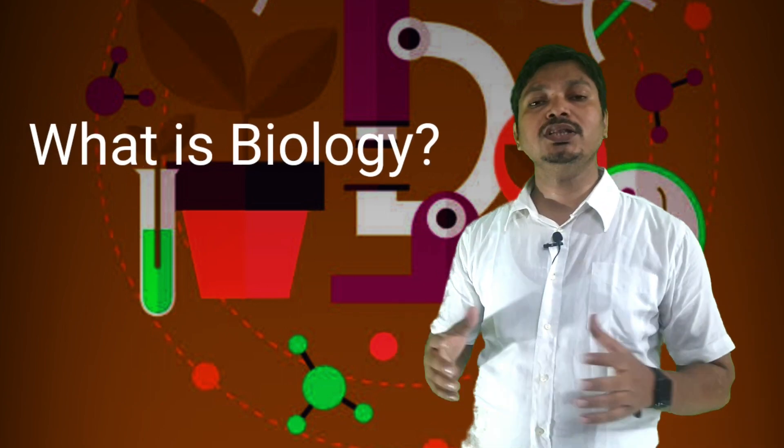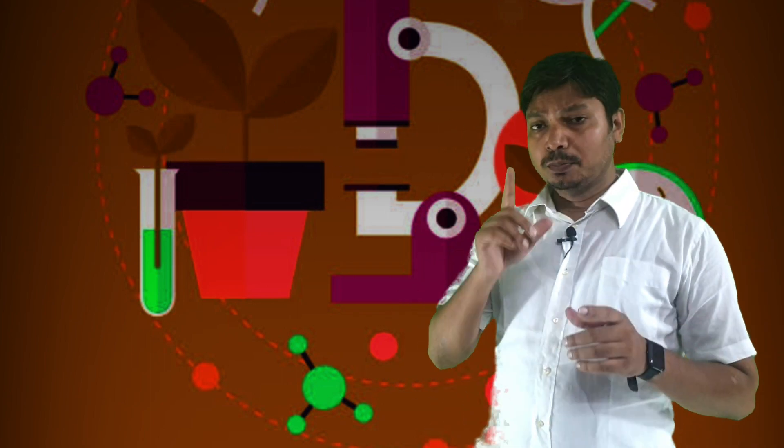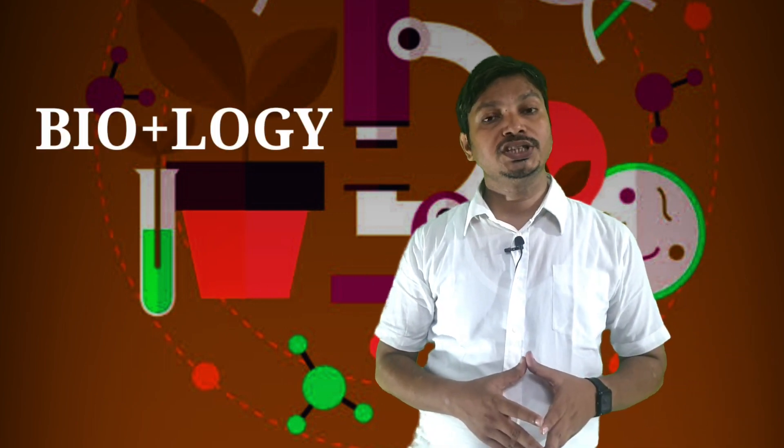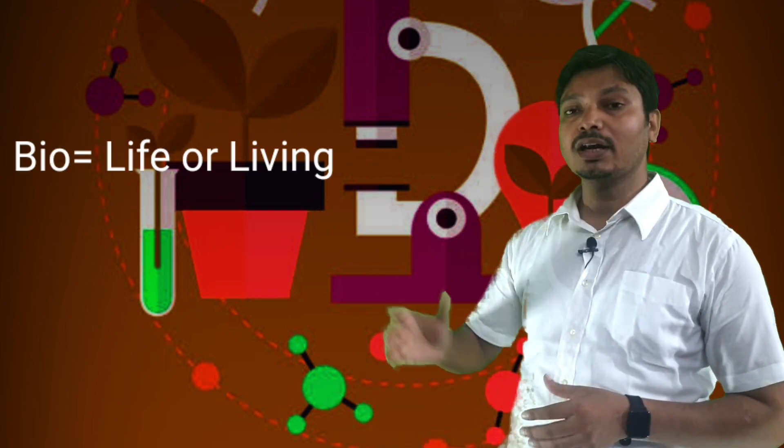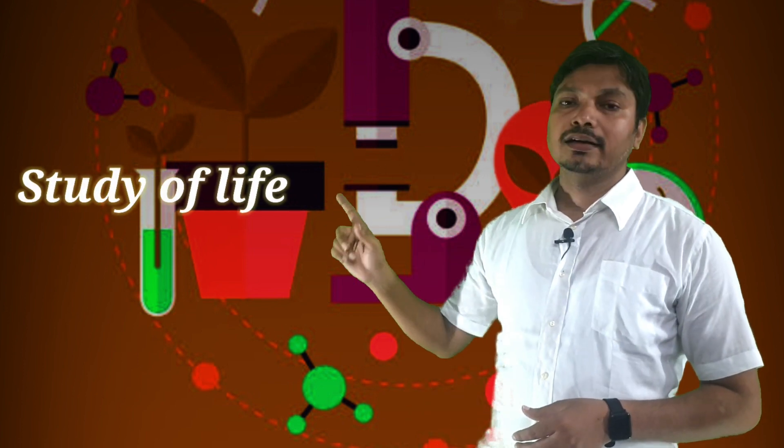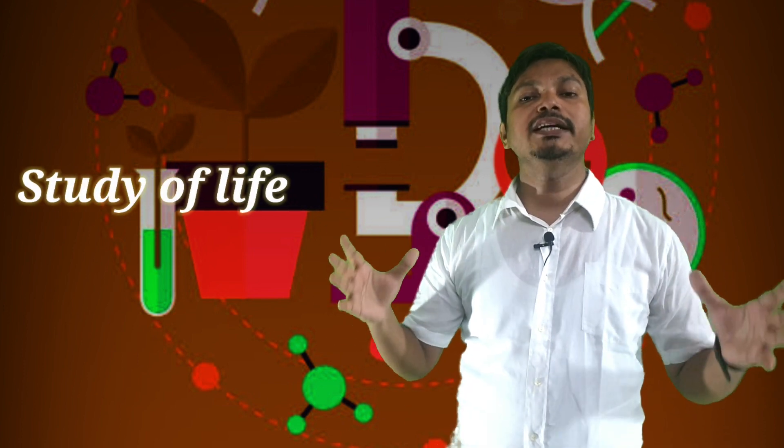What is biology? Biology comes from two words: one is called bio, another is called logi. Bio means the living organisms and logi means study. So biology means the study of living things, or you can say that the study of life is called biology.